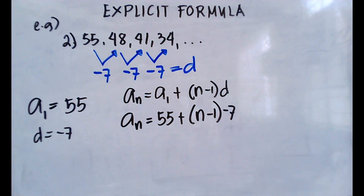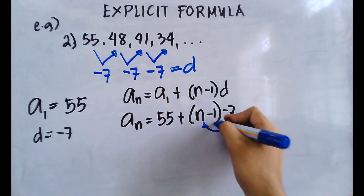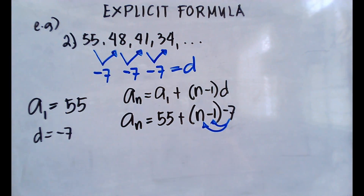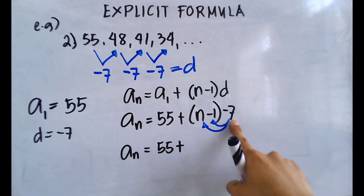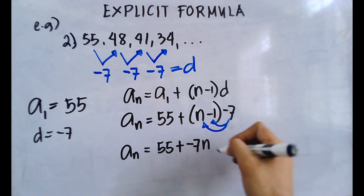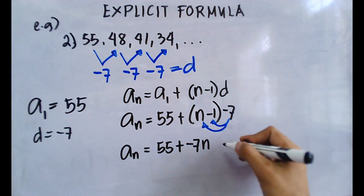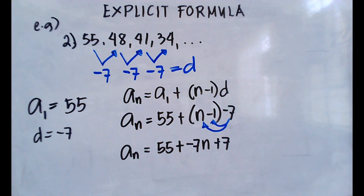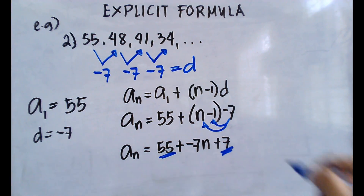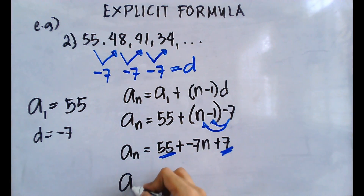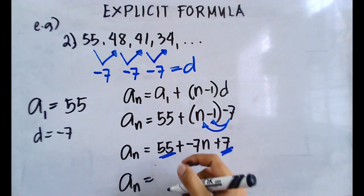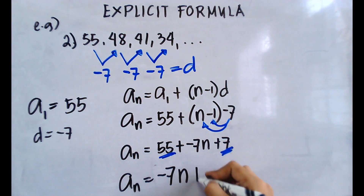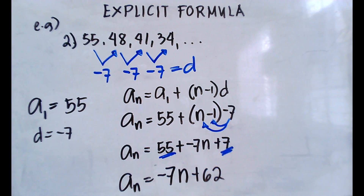Distribute negative 7 to each term inside the parenthesis: negative 7 times n gives negative 7n, and negative 7 times negative 1 gives positive 7. So we have a sub n equals 55 plus negative 7n plus 7. Adding the constant terms 55 and 7 gives 62, so the explicit formula is a sub n equals negative 7n plus 62.